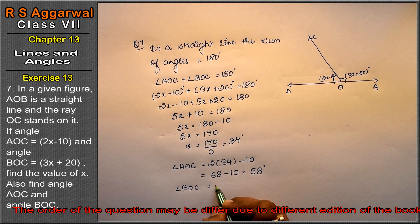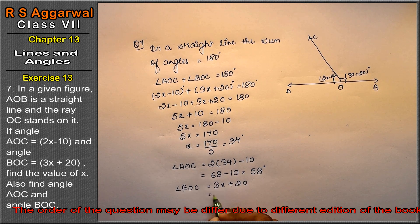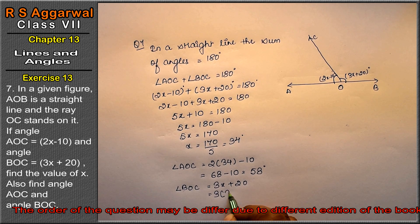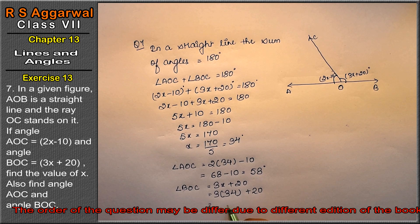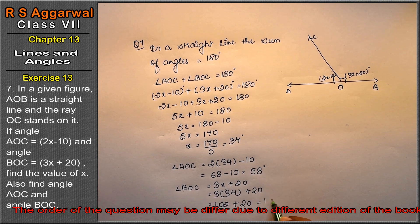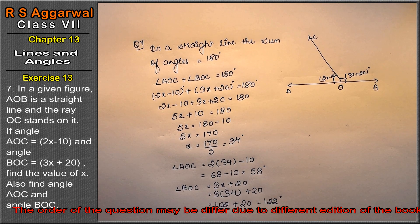And how much is angle BOC? How much is this? That is 3x plus 20. So in place of x is 34. I write 3 times 34 plus 20. So 3 fours are 12, carry 1. 3 threes are 9, and 10 plus 20. That is 122 degrees. The answer.